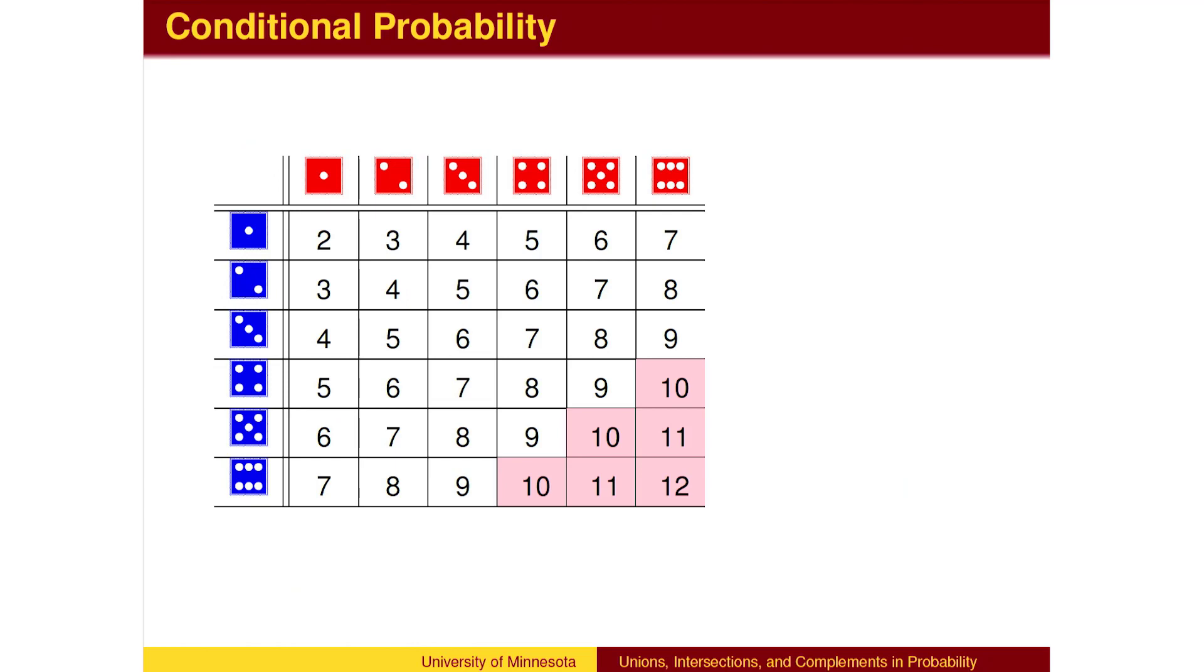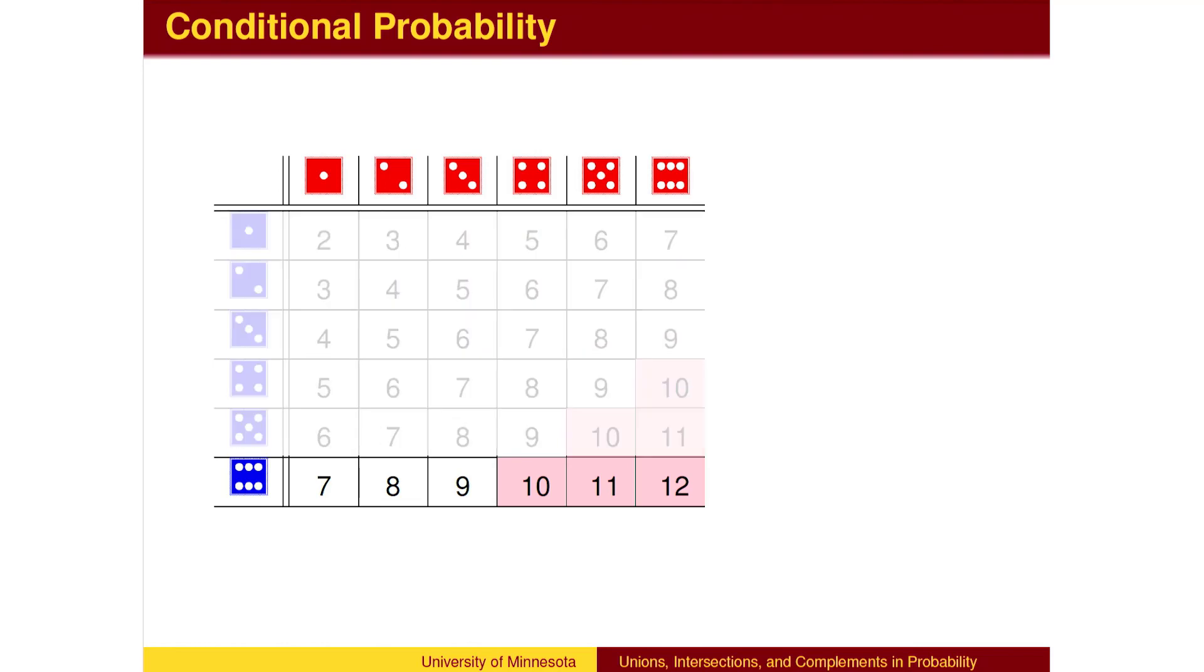Here is another look at the last example. The probability of getting a total of at least 10 when rolling two dice is 6 out of 36. Once we learn that the blue die landed 6, we only have 6 remaining possibilities, 3 of which give a total of at least 10.